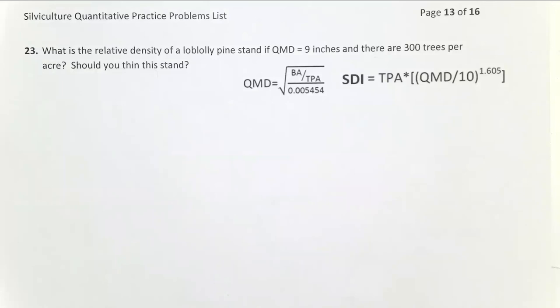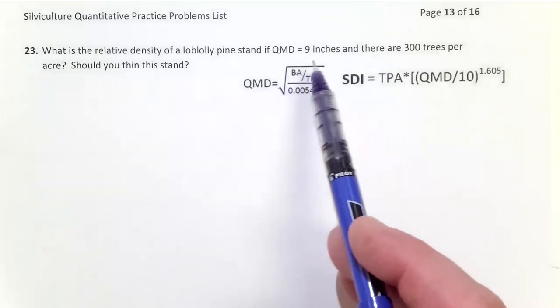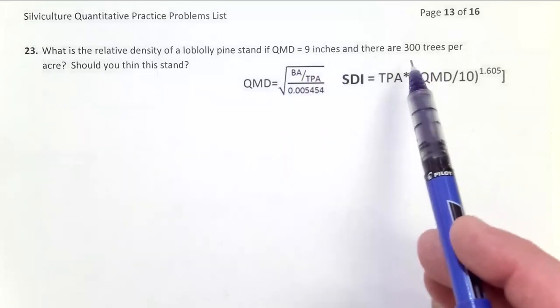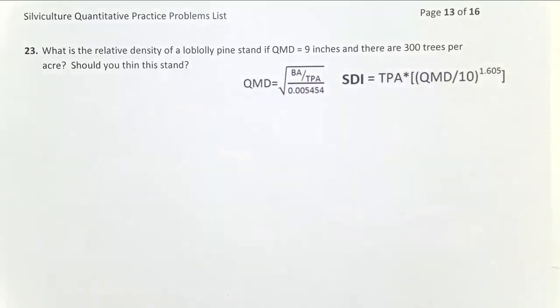Problem 23, we have some simple data on a stand. We have the average tree size, the QMD, and we have how many trees per acre we have. And the question is, should we thin this stand?